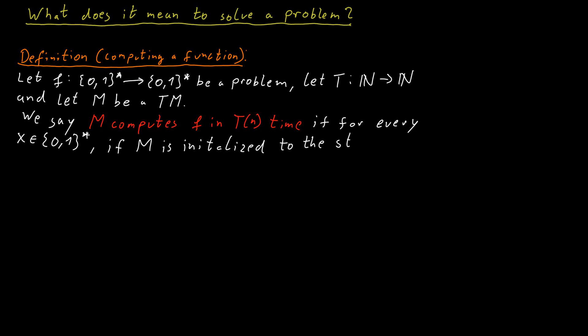If m is initialized to the start configuration for that input x, then after at most t of |x| many steps, the Turing machine halts with f(x) written on its tape.